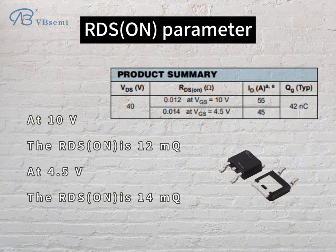RDS(on) parameter: at 10V, the RDS(on) is 12mΩ; at 4.5V, the RDS(on) is 14mΩ.